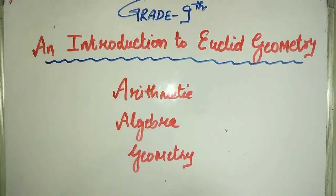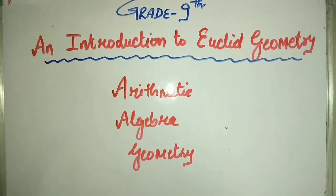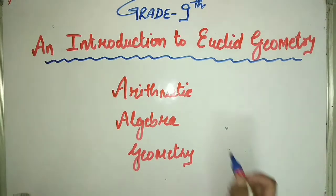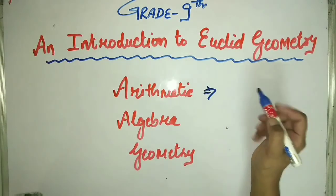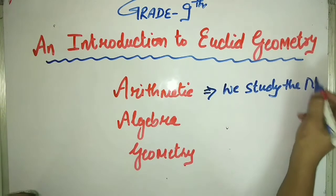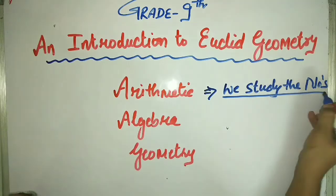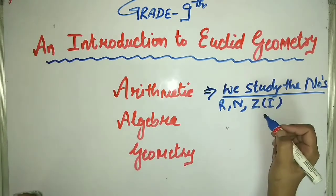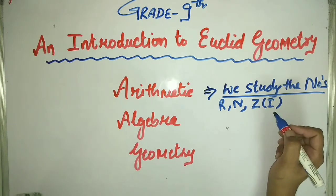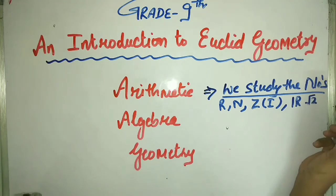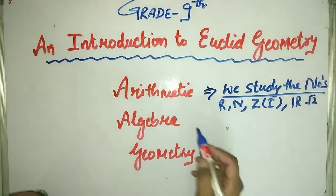It is very obvious from the name of the chapter. Let us begin with the Introduction to Euclid Geometry. First, I want to tell you what is the meaning of arithmetic. In arithmetic, we study numbers — we have real numbers, natural numbers, integers (which can be denoted with Z as well as I), and irrational numbers, which are in the form of a root, like root 2, root 3.